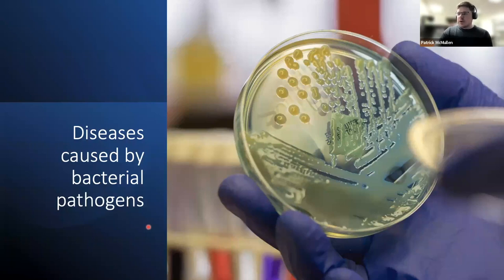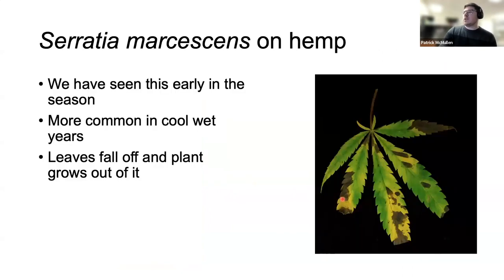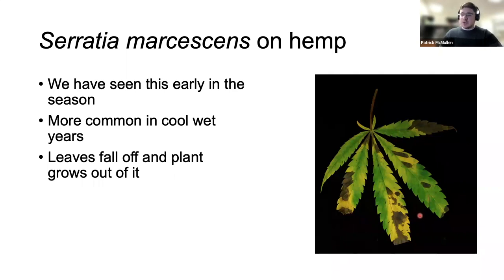The first group of pathogens I'd like to discuss are bacterial diseases. One seen recently in New York is Serratia marcescens, which causes necrosis on leaf tissue and wilt and senescence of the leaf. When plated, we often see white to pinkish colonies. Serratia marcescens is usually seen early in the season and thrives in cool, wet years. As summer progresses and warms up, we usually see less of this disease. After losing some infected leaves, the plant can often grow out of it.